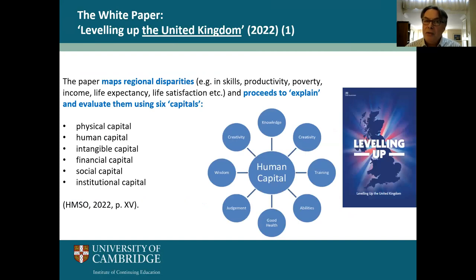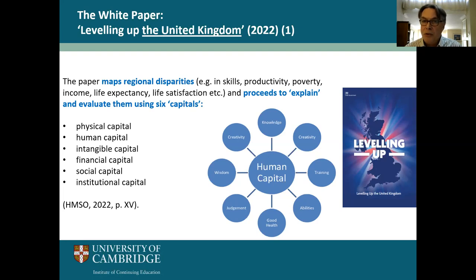The idea of levelling up was outlined in the white paper published in 2022, 'Levelling Up the United Kingdom.' The emphasis on the United Kingdom is significant because the government is trying to keep the country united in post-Brexit Britain, at a time when, for example, Scotland wants independence. In this document, they map regional disparities and inequalities — an exhaustive set of descriptions covering skills inequalities, productivity inequality between different regions, poverty, income, and life expectancy inequalities between areas of the North and South. The document then goes on to explain and evaluate these disparities, drawing on the idea of six forms of capital.